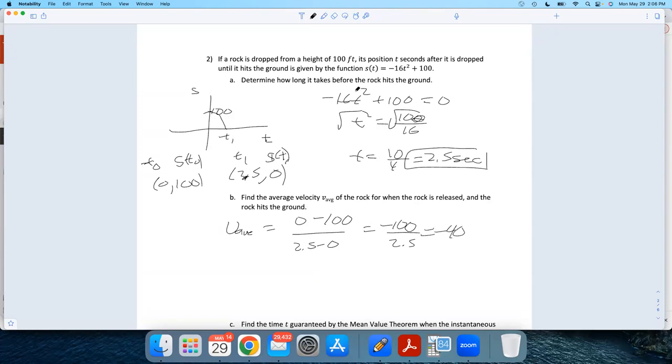And my units here - velocity always has units of position divided by time, feet per second. Why is it negative? Because I'm going down. All my velocities are negative here because I'm going down. Up is positive, down is negative.